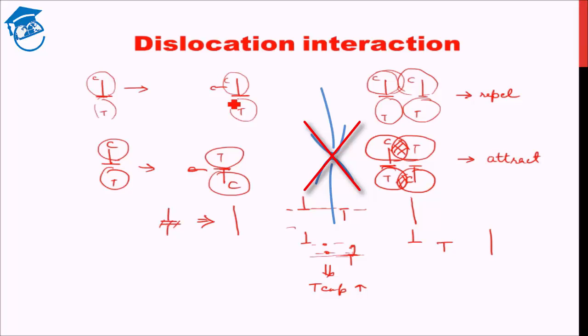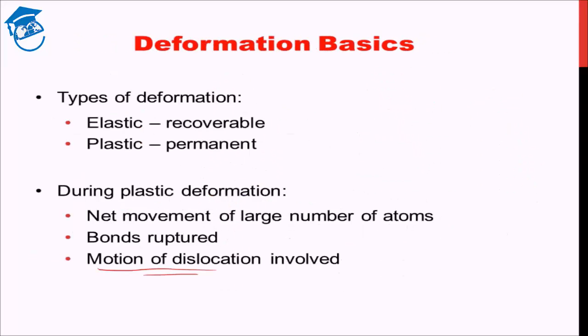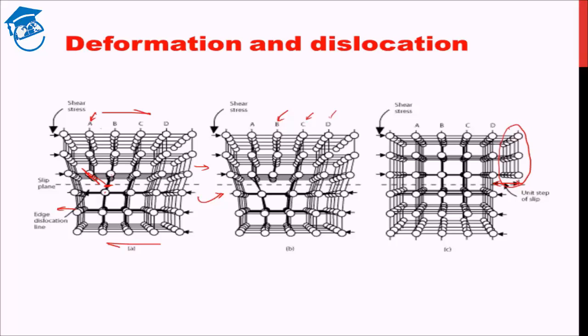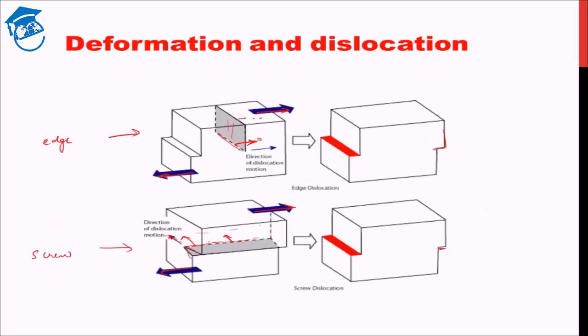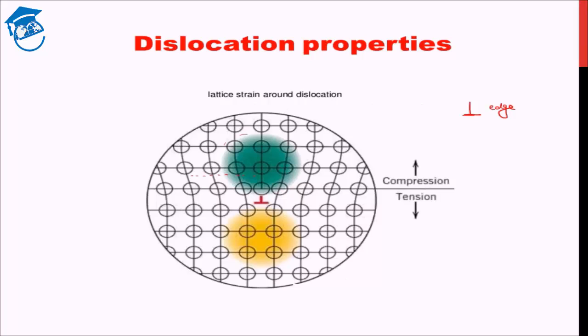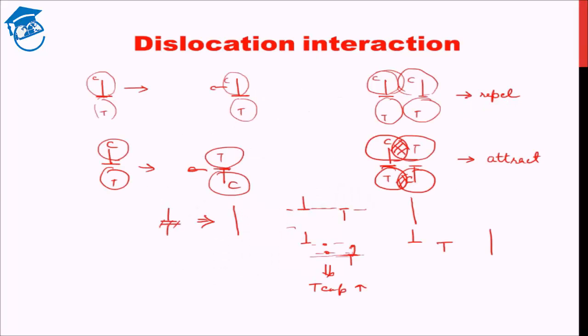This brings a closure to today's lecture. To summarize: we discussed elastic and plastic deformation, how dislocation leads to deformation and how dislocation movement takes place, what lattice strain is associated with a dislocation, and how two dislocations interact with each other. With these ideas I will close today's lecture. The next lecture will build further upon this knowledge. Have a great day, goodbye.